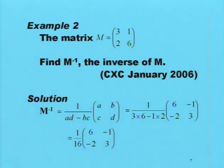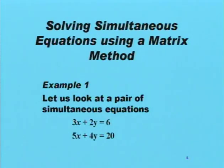Here is the solution. M inverse is equal to 1 over AD minus BC times (6, -1, -2, 3). That gives us 1 over (3 times 6 minus 1 times 2) times (6, -1, -2, 3), which equals 1/16 times (6, -1, -2, 3).